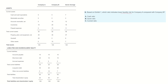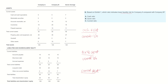Cash ratio is measured by cash assets divided by current liabilities. Quick ratio is measured by quick assets divided by current liabilities. And current ratio is measured by current assets divided by current liabilities.